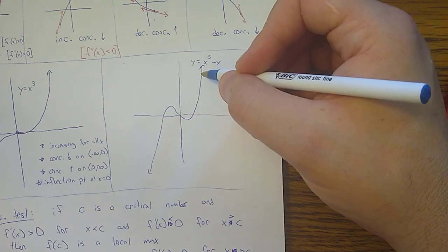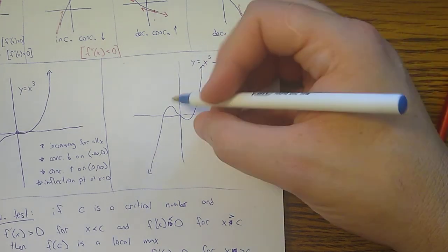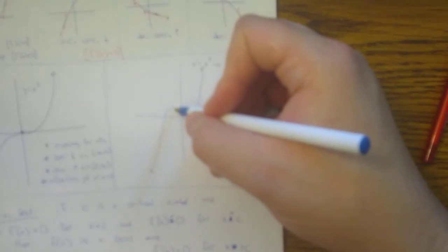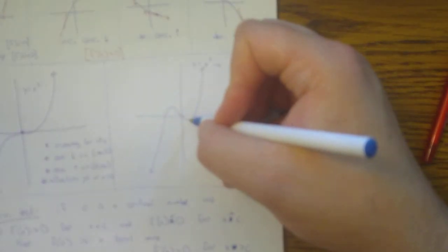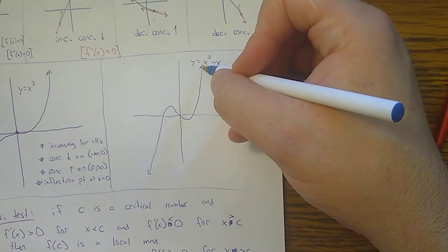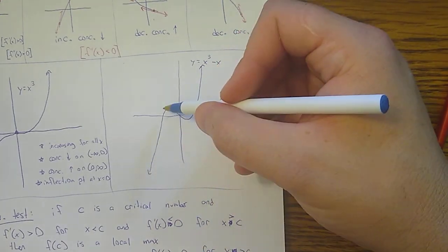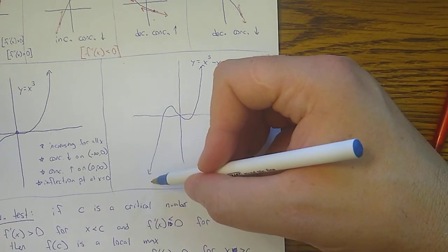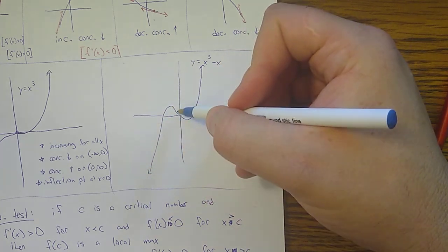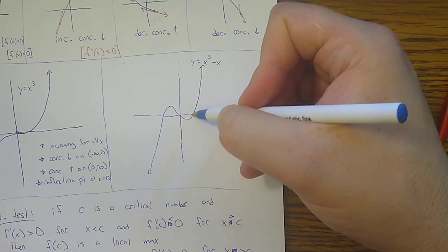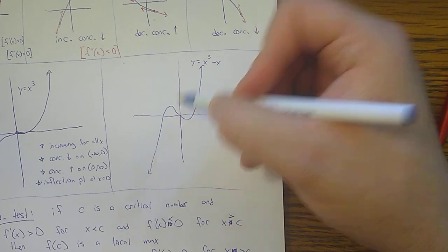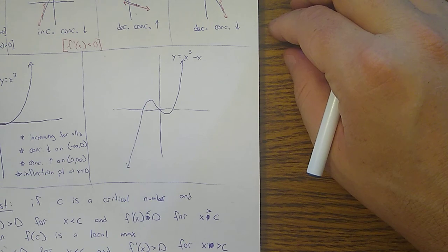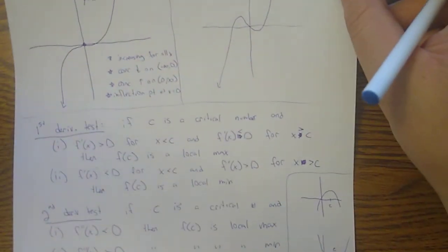This one is x³ - x. It is increasing up to a point, then decreasing for a while, then increasing again — a more complicated pattern. It is concave down up until a certain point and then becomes concave up, so this is again a point of inflection.